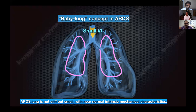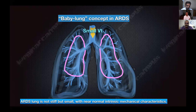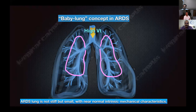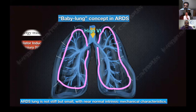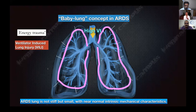If we give a small tidal volume to the baby lung, it distends and comes back — no harm done. But if, thinking it is a full adult lung, we give a relatively high tidal volume, the baby lung gets over-distended because the atelectatic portions are not receiving any part of this air. Ultimately there will be energy trauma due to this additional pressure, resulting in ventilator-induced lung injury.